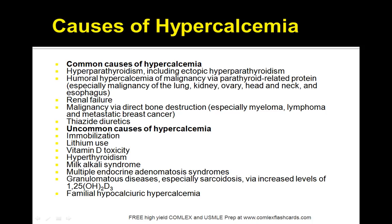So, what are the causes of hypercalcemia? You can have hyperparathyroidism, including ectopic hyperparathyroidism. Patients can have humoral hypercalcemia of malignancy via parathyroid-related protein, especially malignancy of the lung, kidney, ovary, head and neck, and esophagus. There can be renal failure, and malignancy via direct bone destruction such as myeloma, lymphoma, and metastatic disease.